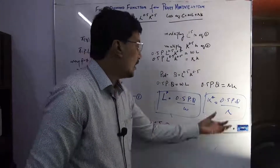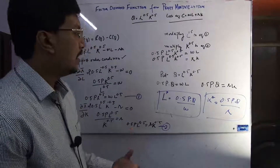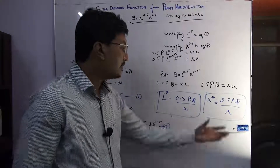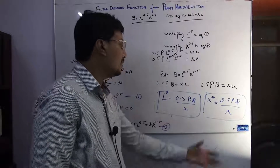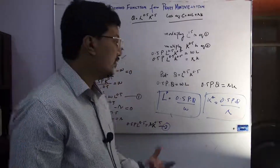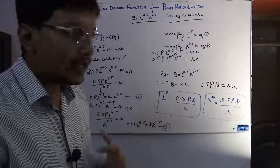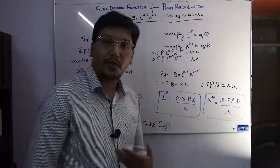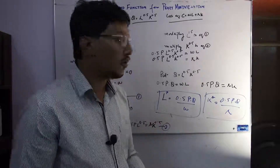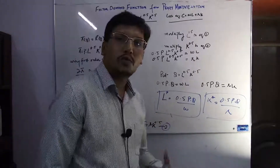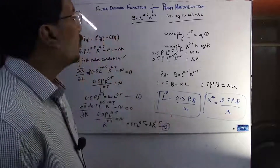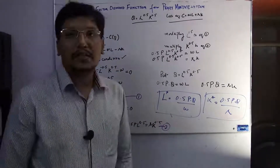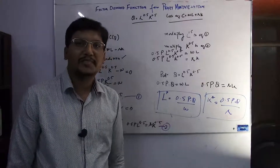Similarly, the factor demand function for capital is K = 0.5PQ / R. The rental price R is in the denominator, so it is inversely proportional to capital demand — as the price of capital increases, the firm demands less capital. It is directly proportional to the commodity price P and output Q: if the firm wants to produce more, it must employ more capital. This concludes the factor demand function from the profit maximization approach.